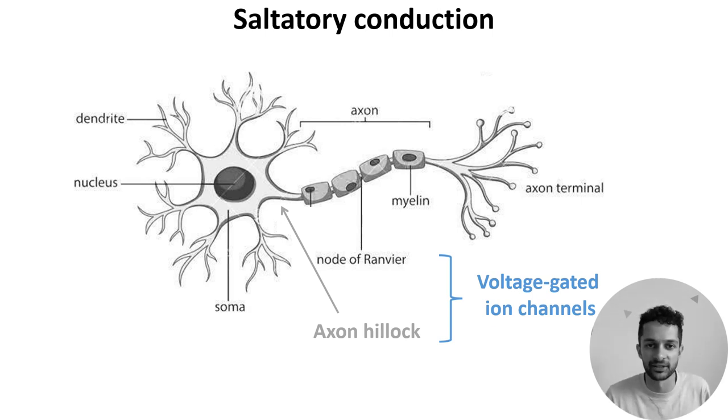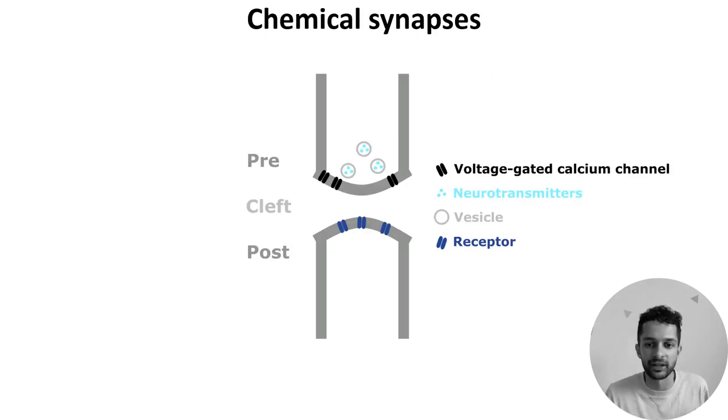So what happens once the signal reaches the neuron's axon terminals? Well, if we zoom in on one of these terminals, we can see that this is where our neuron connects to another. We call this connection a synapse and term the neurons either side the pre- and post-synaptic neurons. These connections can be either electrical, known as gap junctions,